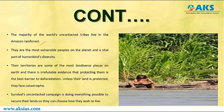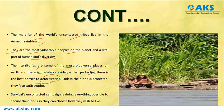The majority of the world's uncontacted tribes live in the Amazon Rainforest, considered the lungs of the earth. They are the most vulnerable people on the planet and a vital part of humankind's diversity. These territories are among the most biodiverse places on earth, and protecting them is the best barrier against deforestation. Unless their land is protected they will face catastrophe. The Survival Contact campaign is doing everything possible to secure their land so they can choose how they wish to live.